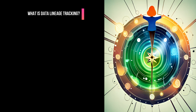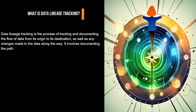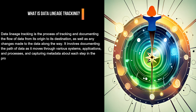What is Data Lineage Tracking? Data Lineage Tracking is the process of tracking and documenting the flow of data from its origin to its destination, as well as any changes made to the data along the way. It involves documenting the path of data as it moves through various systems, applications, and processes and capturing metadata about each step in the process.